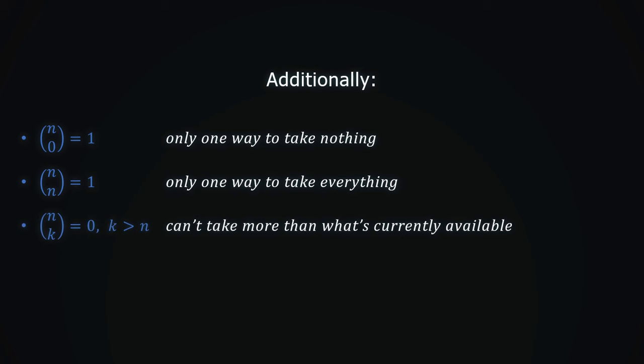If k is greater than n, then n choose k equals 0, because it is impossible to take more objects than what is currently available. Very simple concept, isn't it?